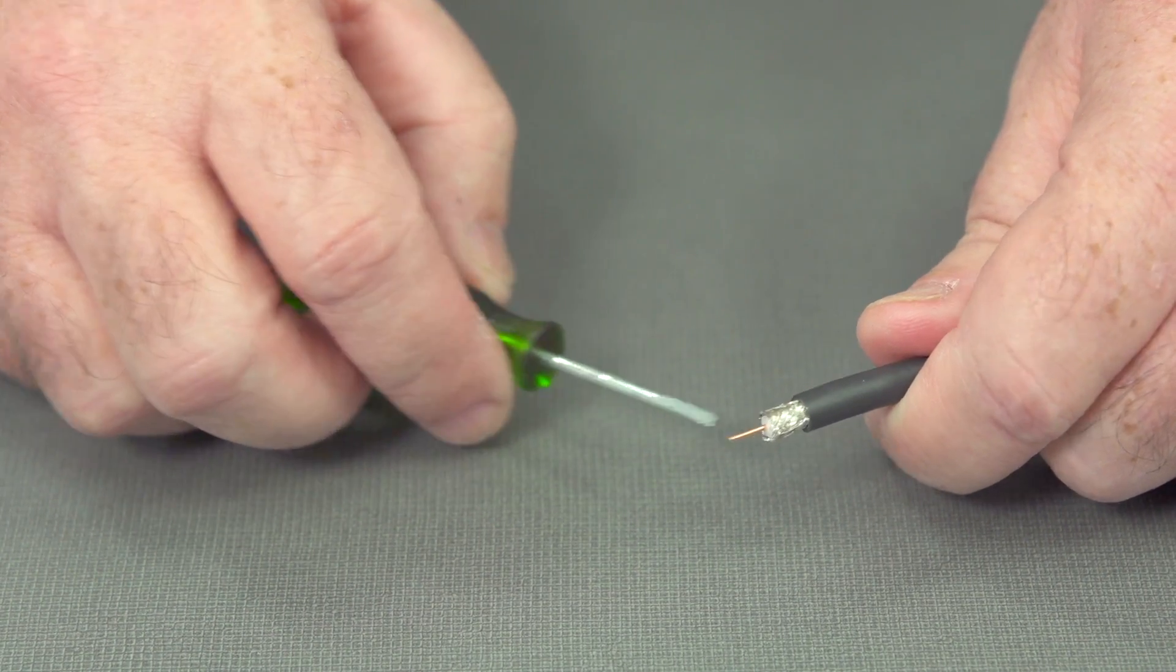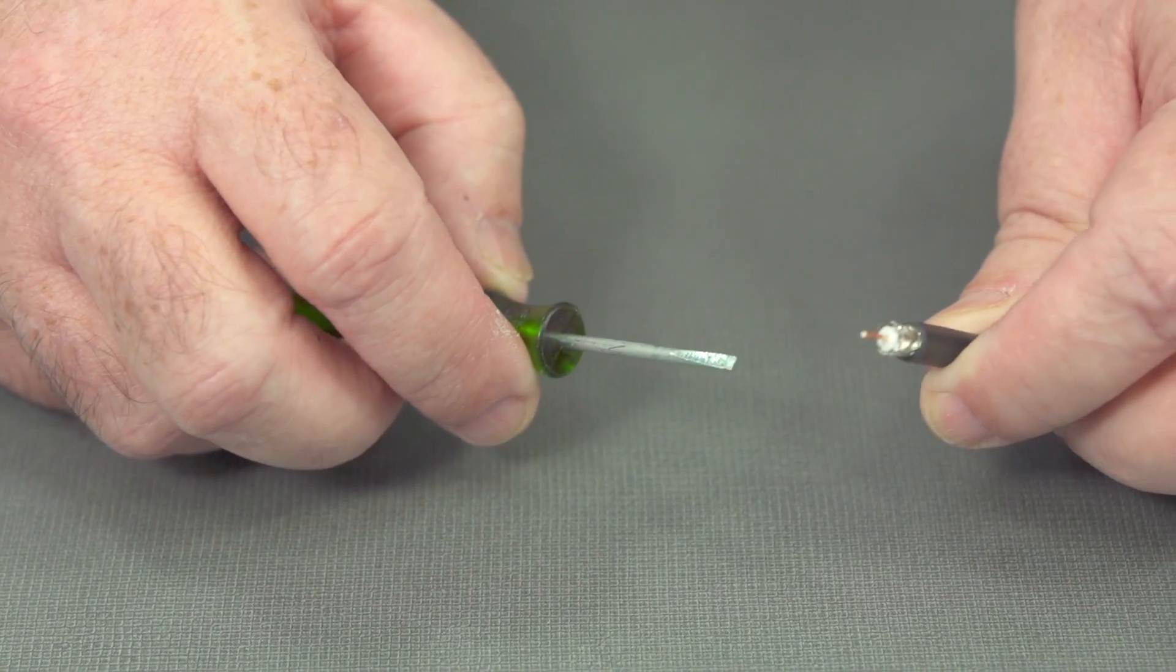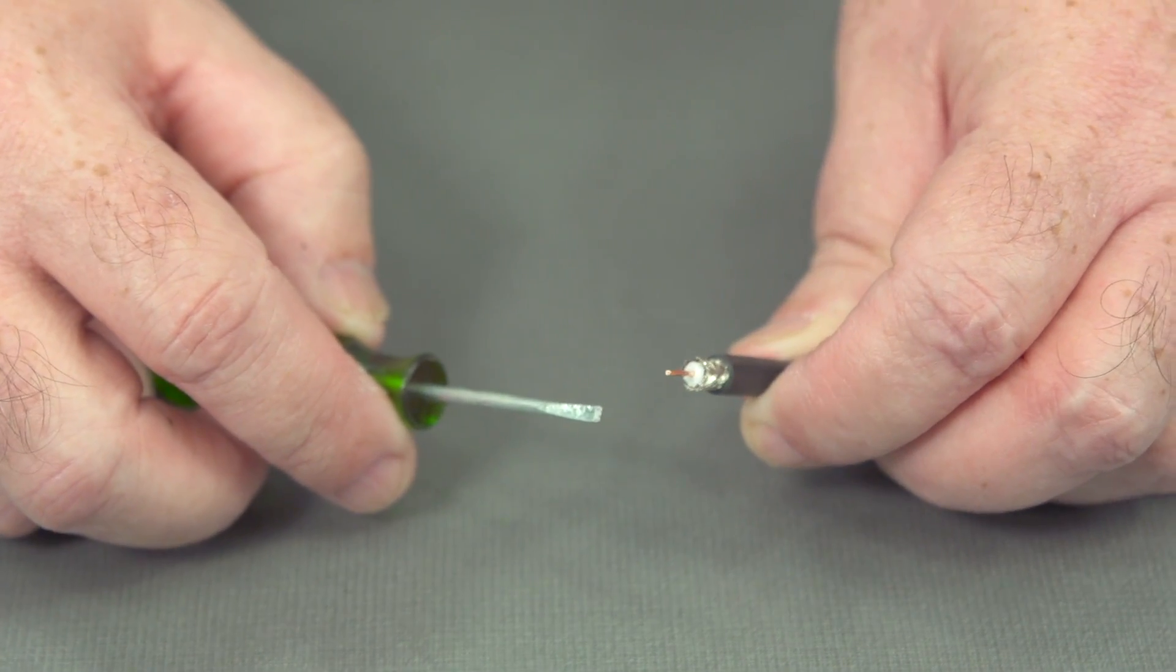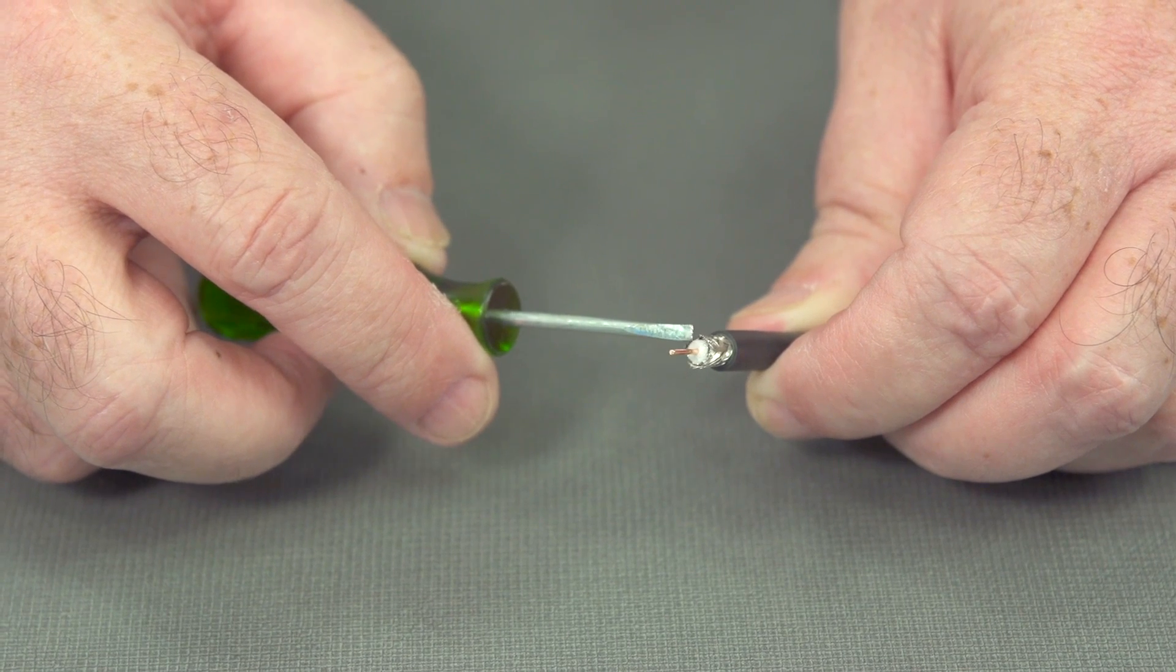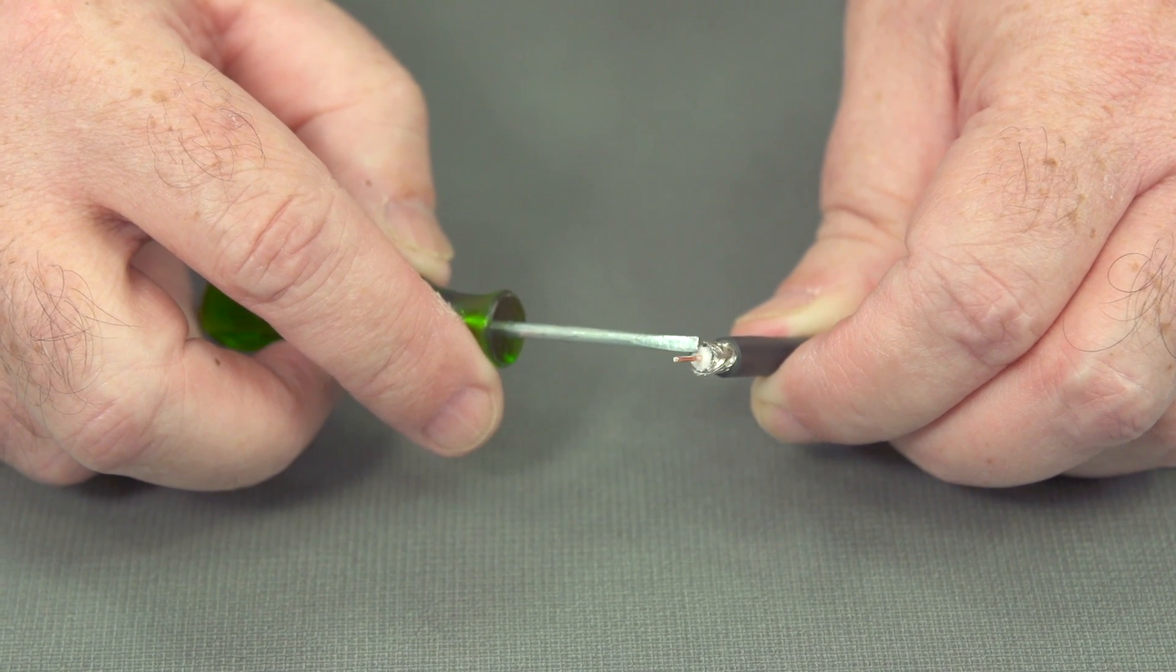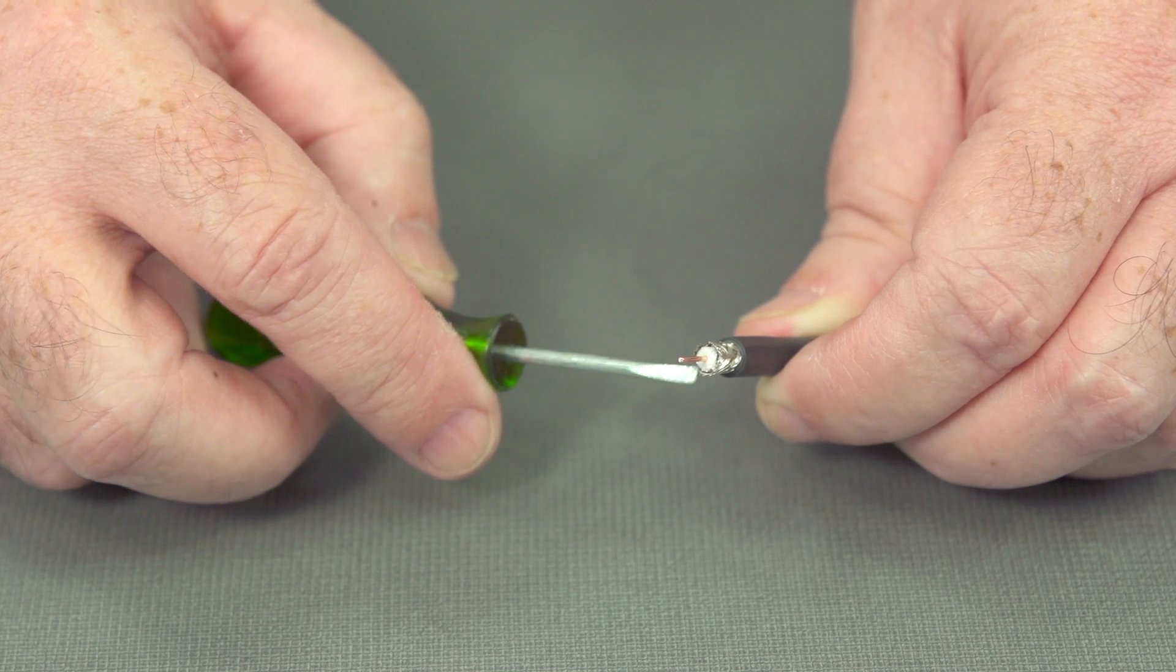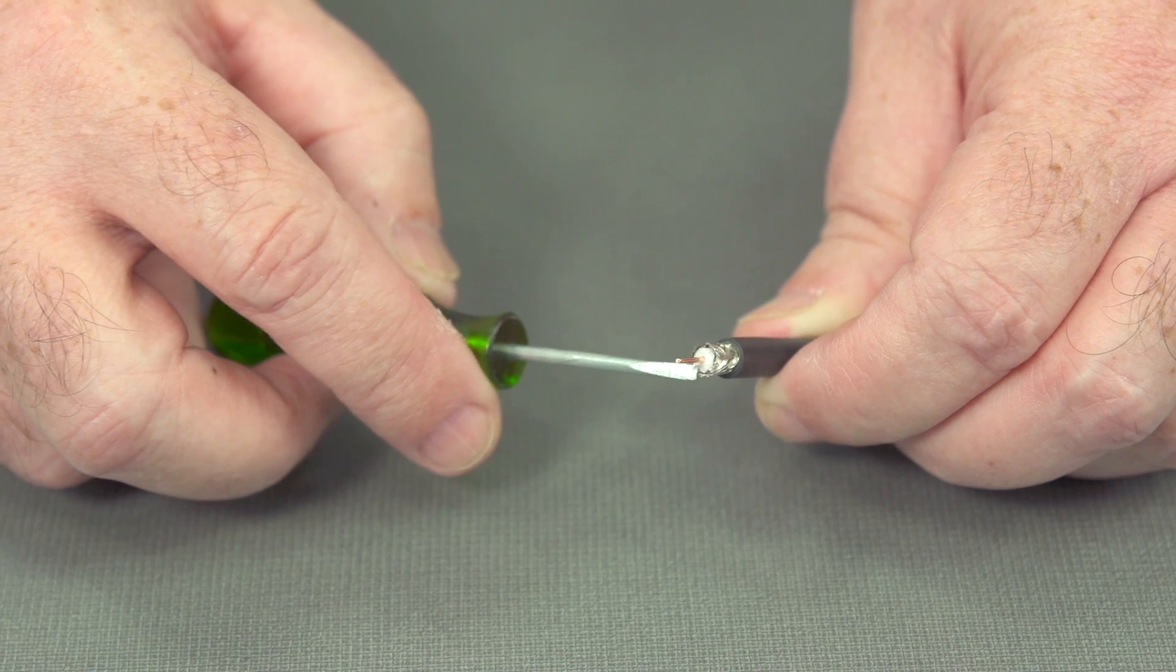This is the braided shield on the outside. Let's look inside here. One of the first things to always check on these is to see if there's a piece of the braided shield that's wrapped around the center conductor. That will cause a lot of problems for you, so you want to make sure that that's not there.